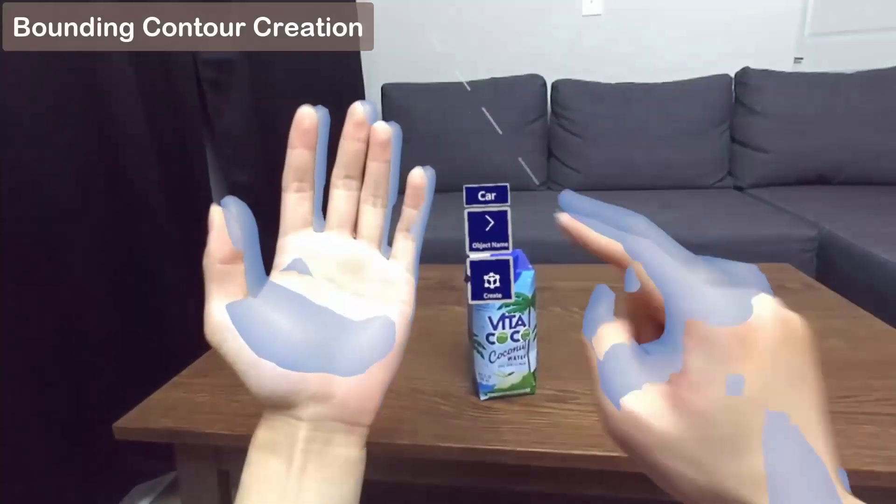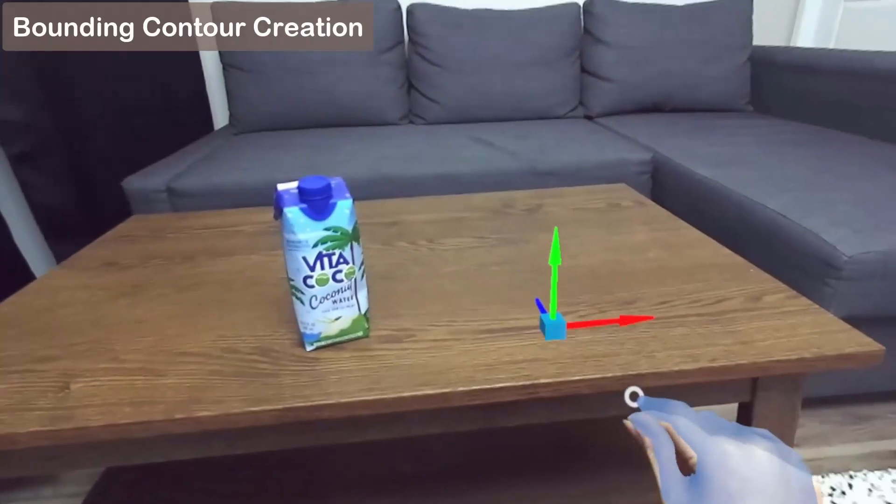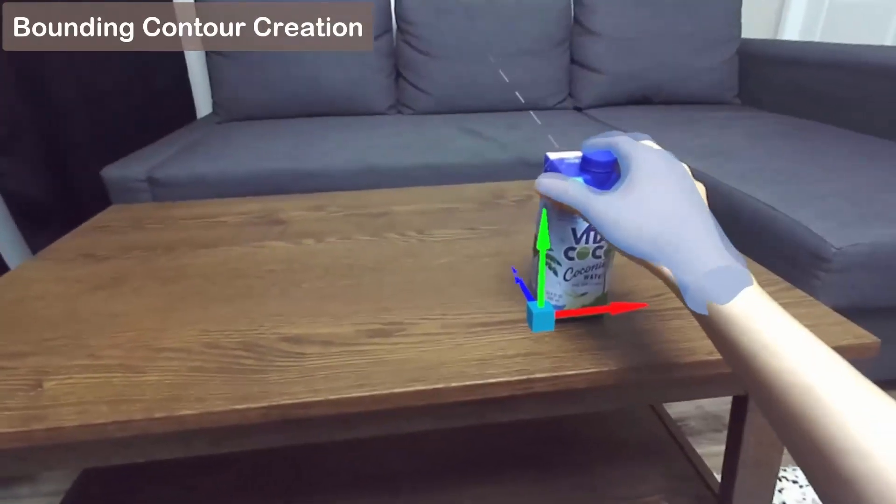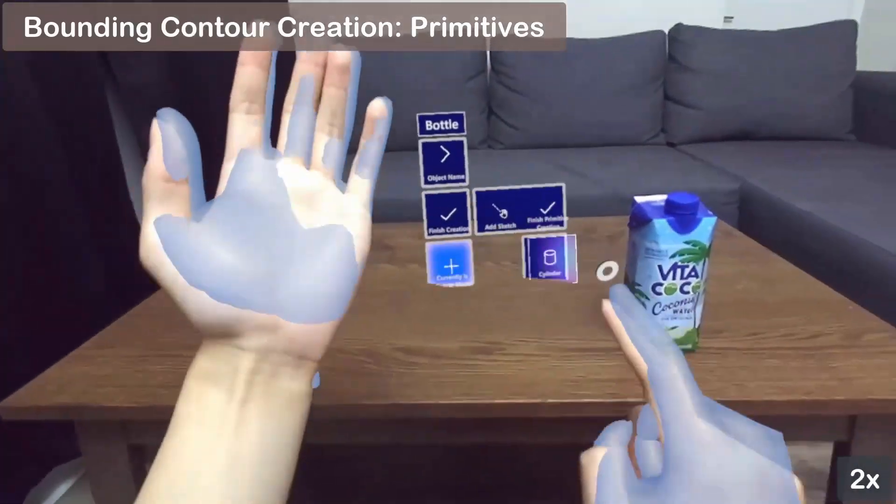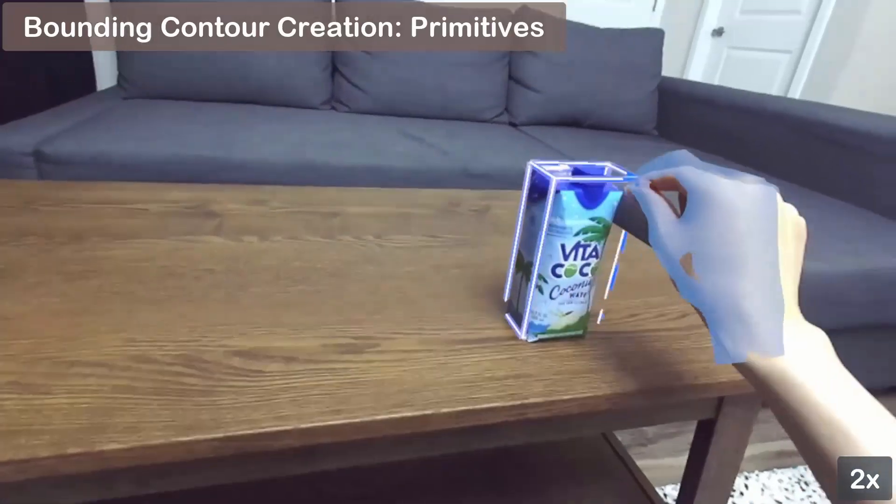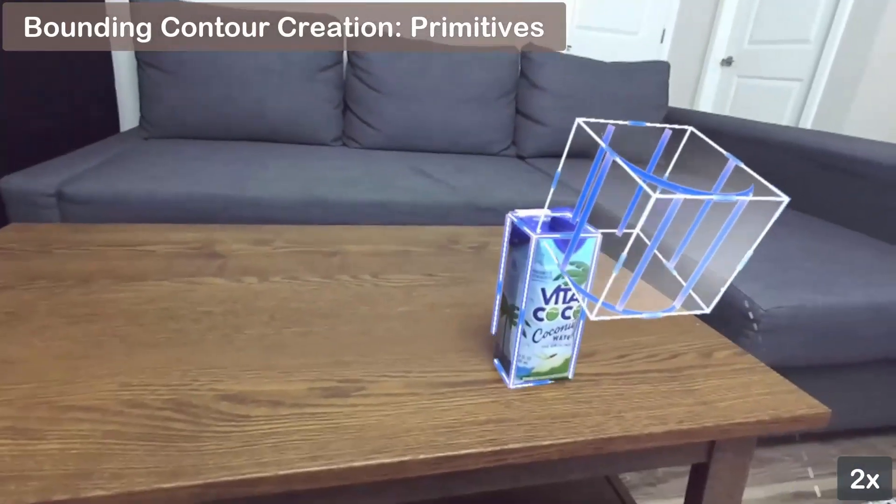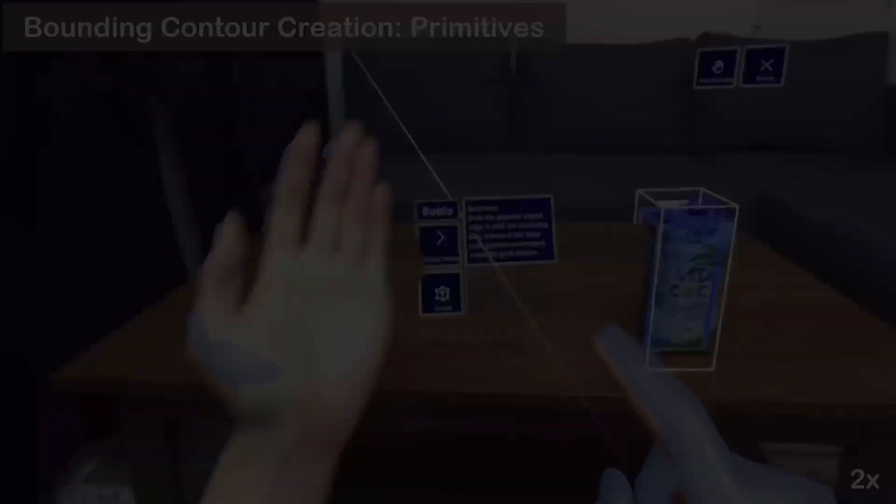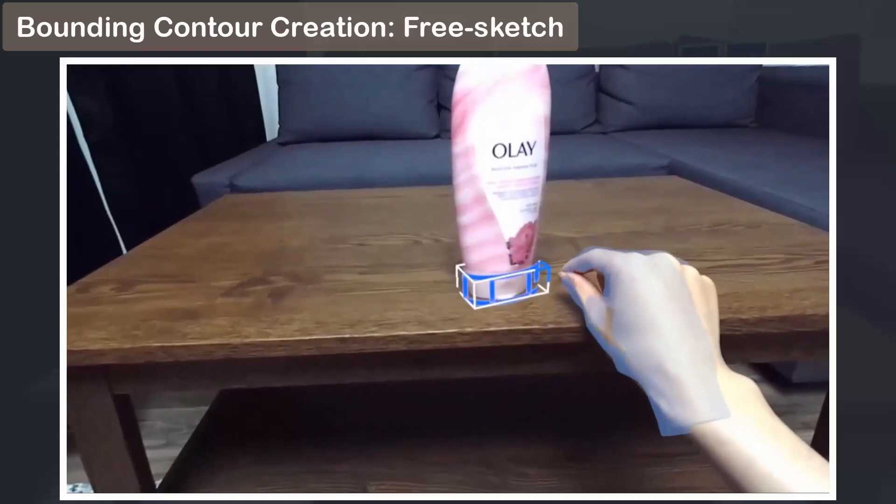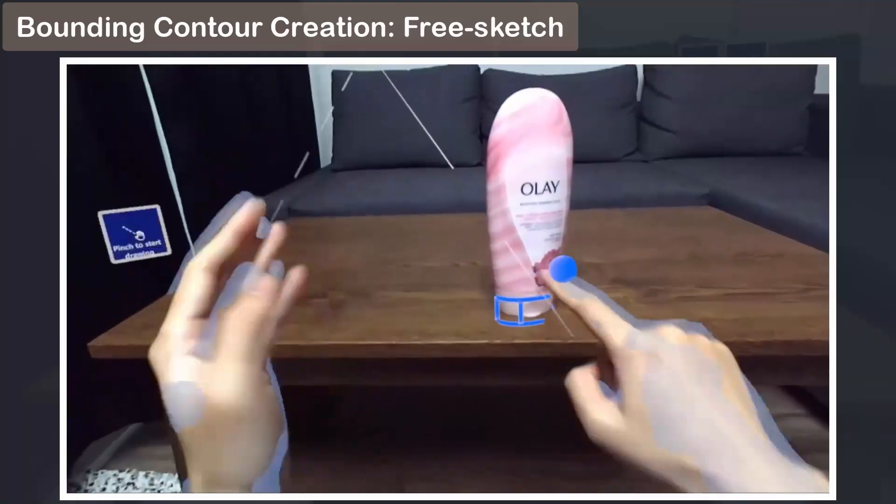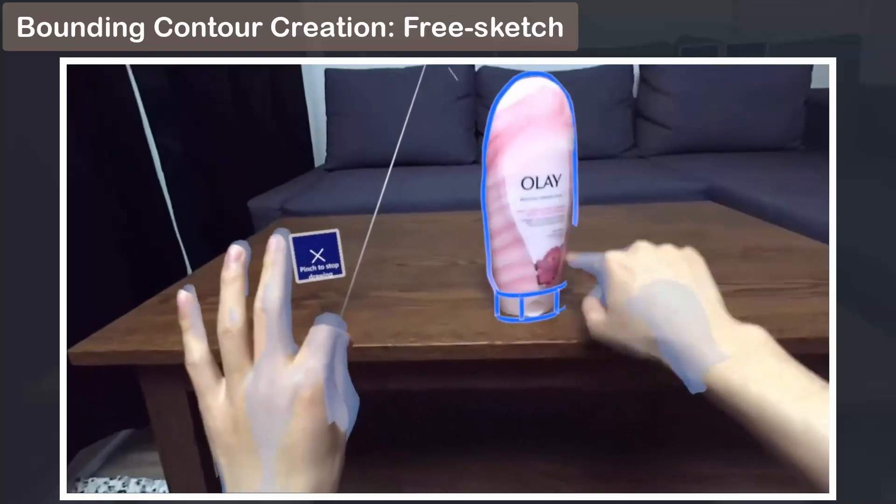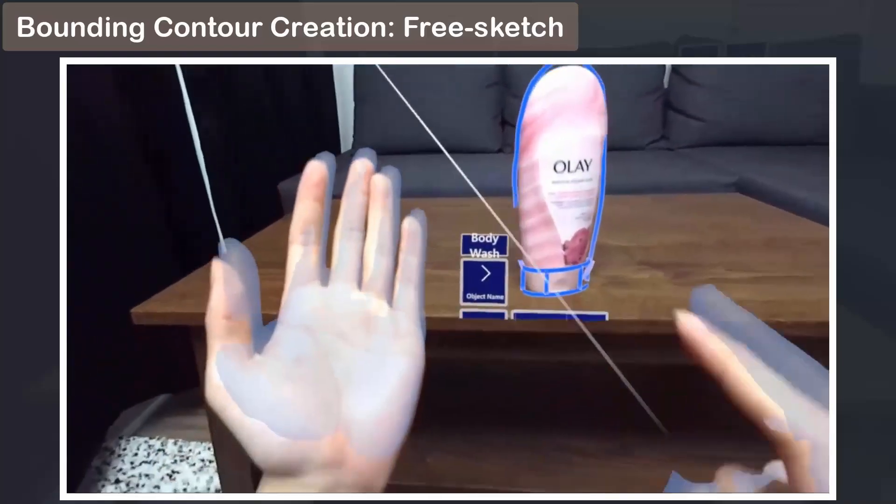The user first aligns the target object with the coordinate icon to set the primary orientation of the bounding contour. Then, the user can align multiple primitives with the corresponding parts of the object to build a bounding contour. Or, the user can sketch complicated 3D curves of the object using the movements of the index finger while touching the object's surface to get haptic feedback.